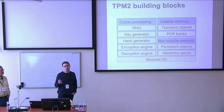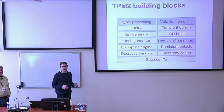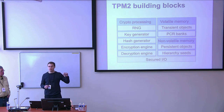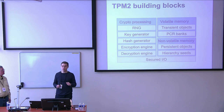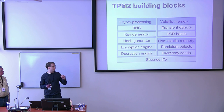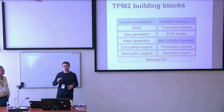That volatile memory also contains the platform configuration registers (PCRs) — a set of registers that store hashes for things that have been measured. Finally, it has non-volatile memory that can be used to persist objects securely. This memory also contains the seeds that are the root of trust of the hierarchy. These seeds are created when you initialize the TPM, and all the primary keys are derived from these seeds using a key derivation function. This primary key never leaves the TPM and is the root of trust.